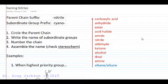Let's look at naming nitrile as another carboxylic acid derivative. As a priority group, if the nitrile is our highest priority group in the compound on this list, it will be named with the suffix nitrile at the end of the parent chain name.